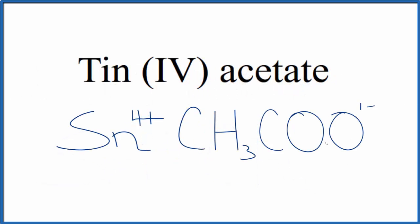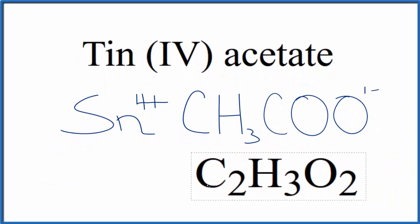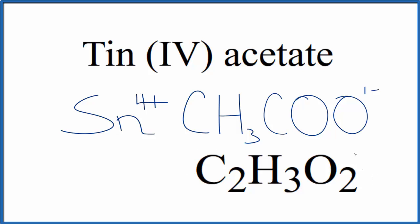Note that sometimes you'll also see the acetate ion written as C2H3O2, and that's 1 minus. Same thing, just organized a little differently.